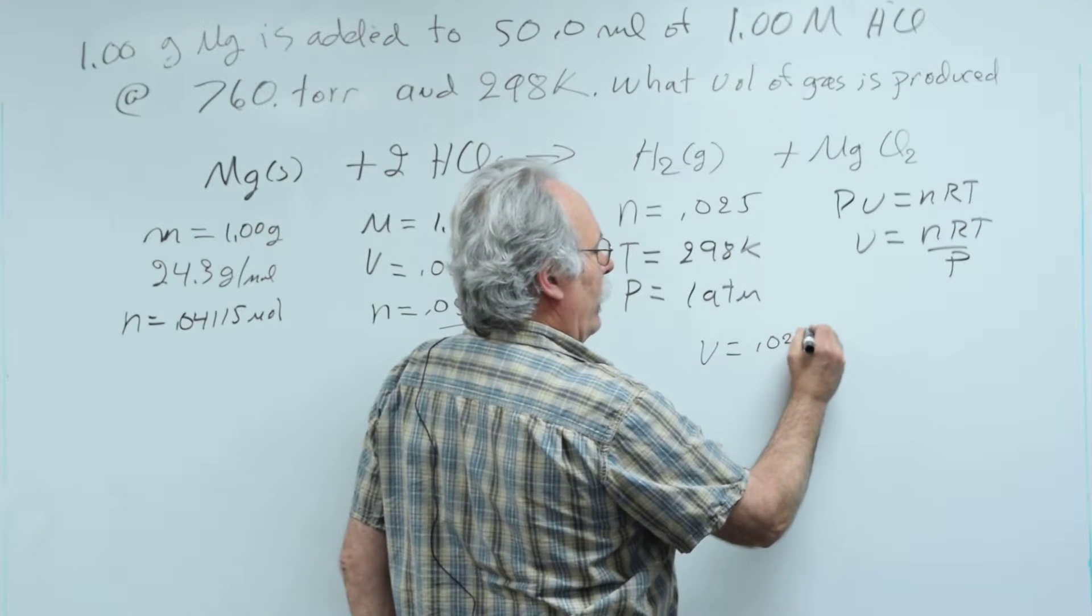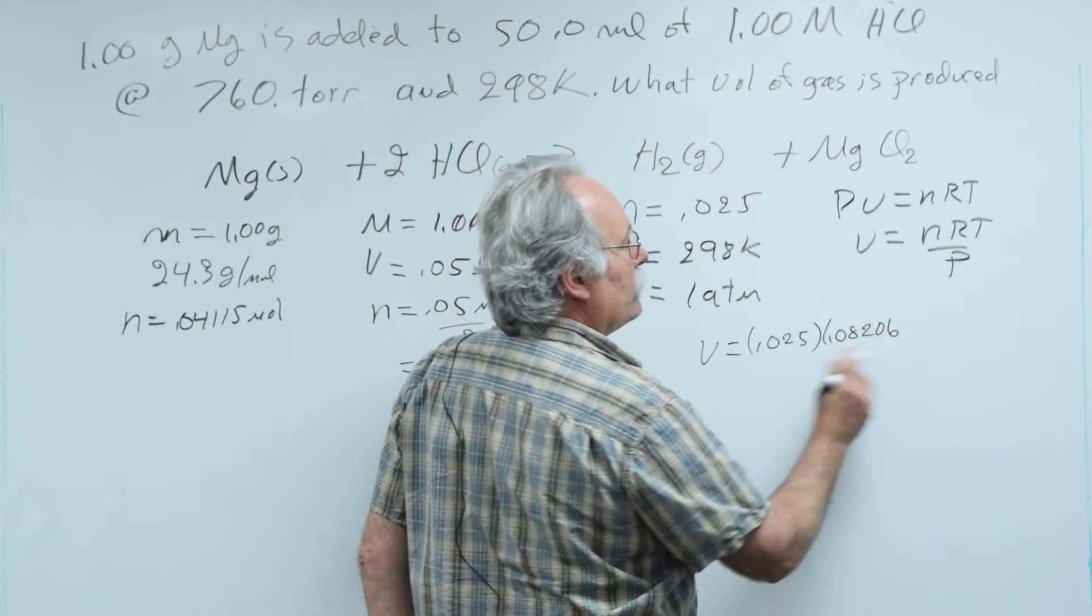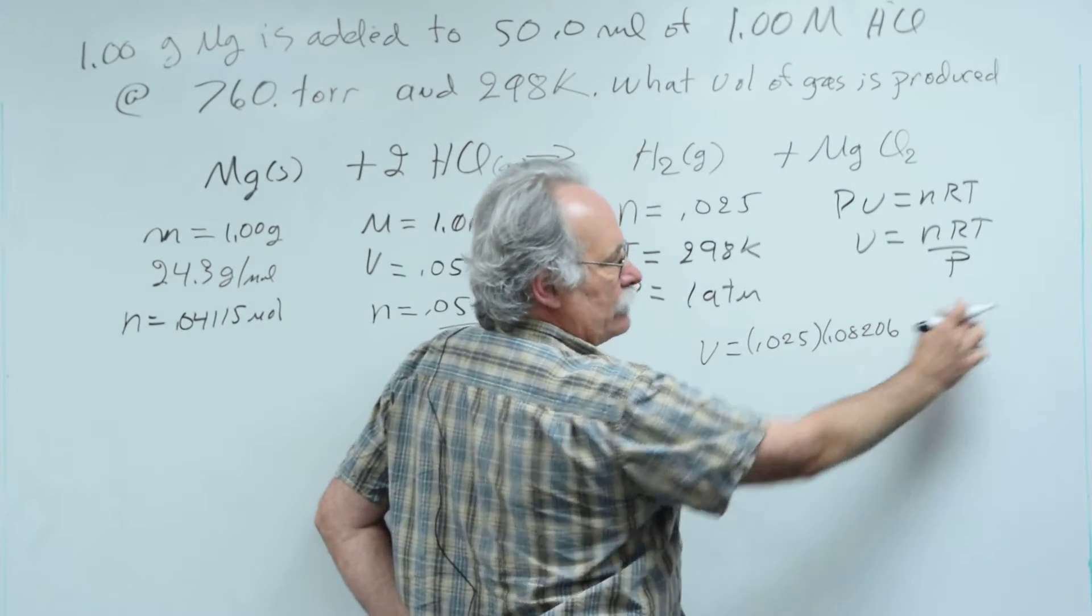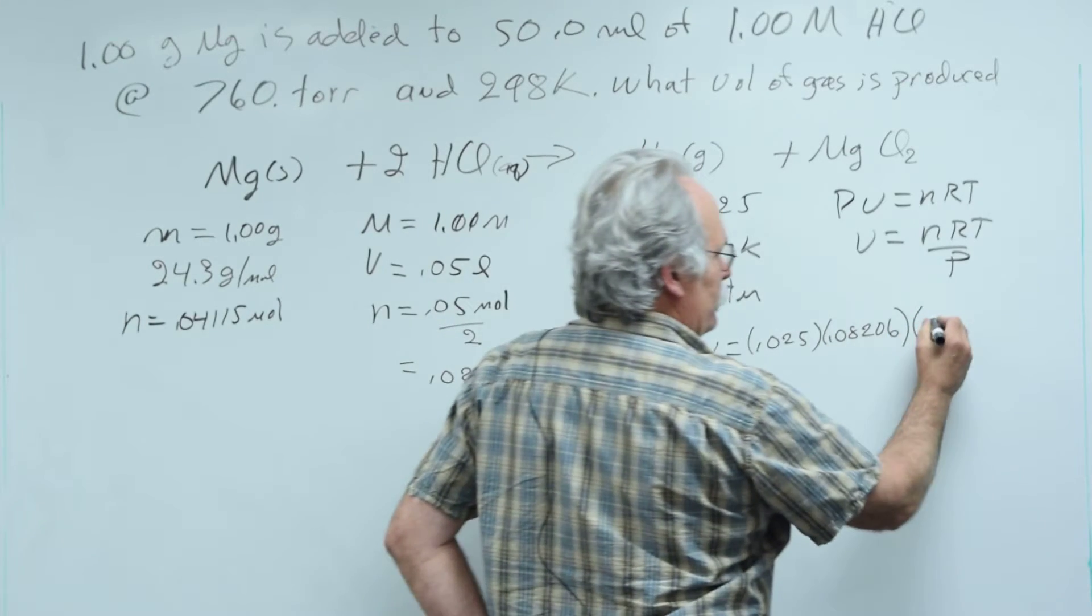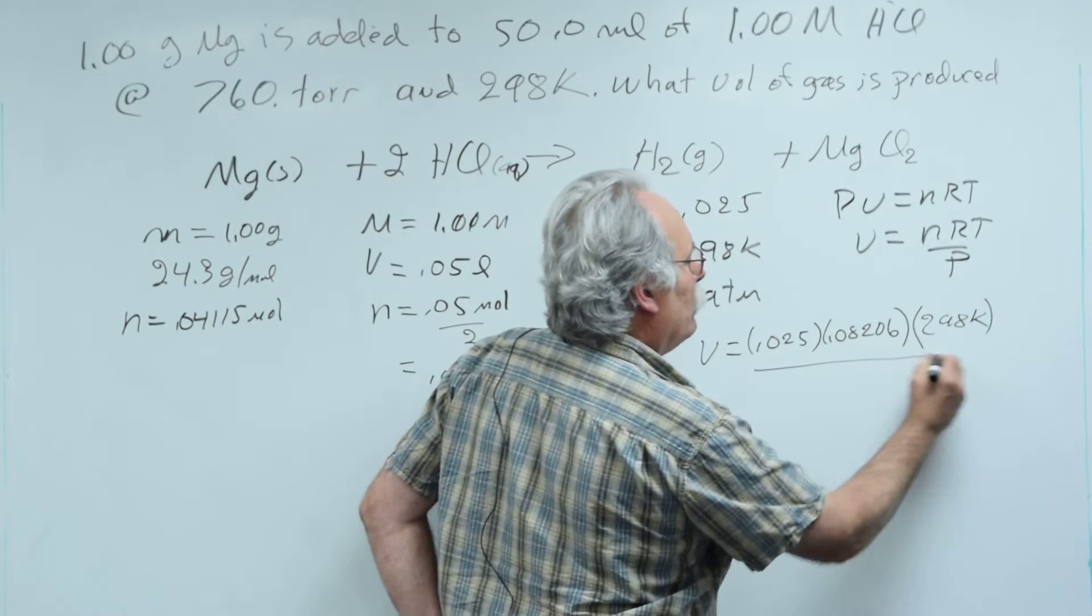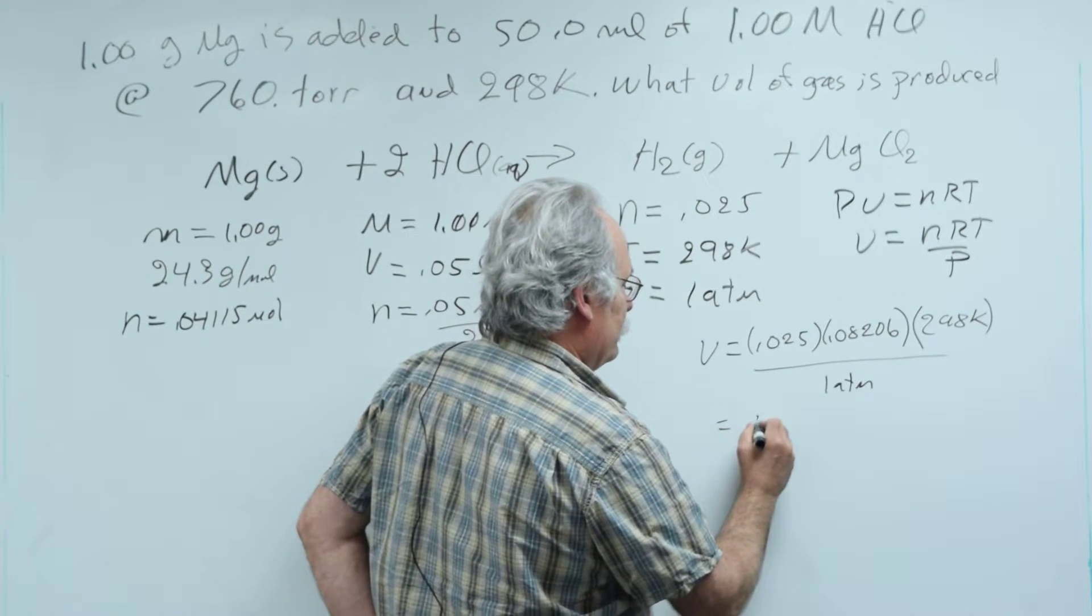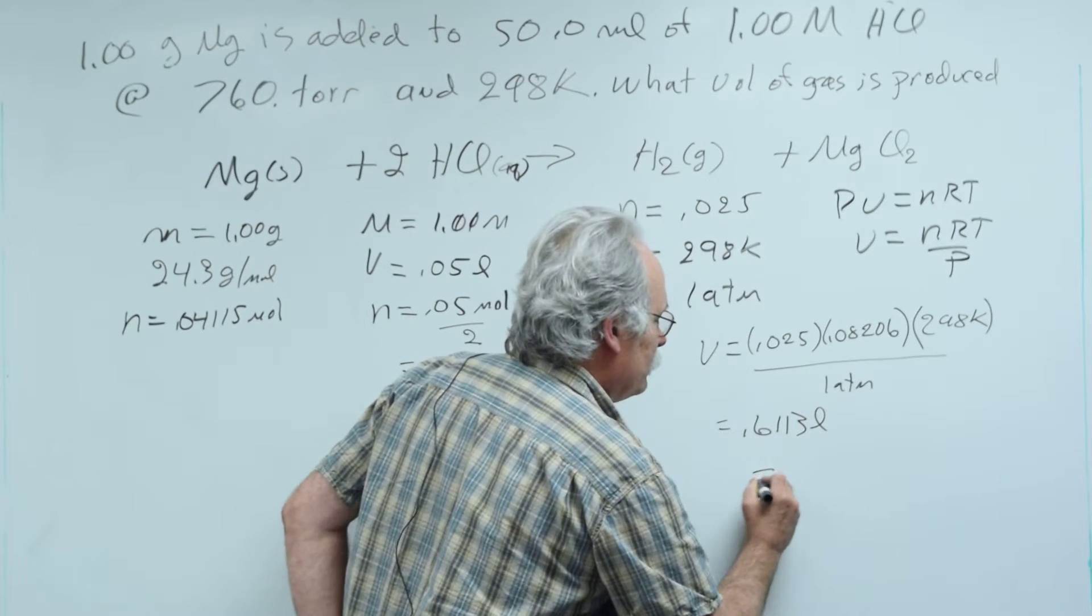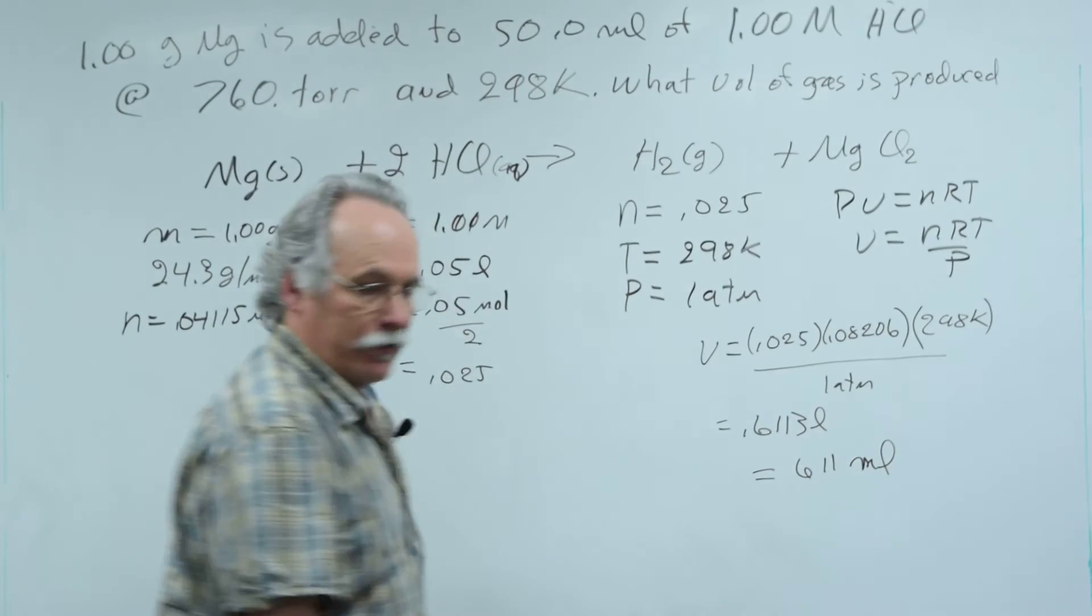to 0.025 times 0.08206 liters, atmospheres per mole Kelvin. You should use your units, but I'm going to run out of space. Times my temperature, which is 298 Kelvin, divided by my pressure, which is 1 atmosphere. And I now come up with 0.6113 liters, which is better reported as 611 milliliters.